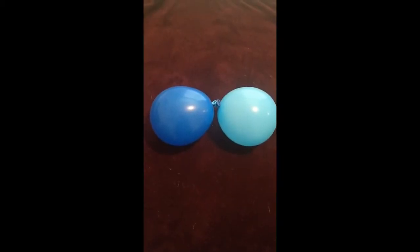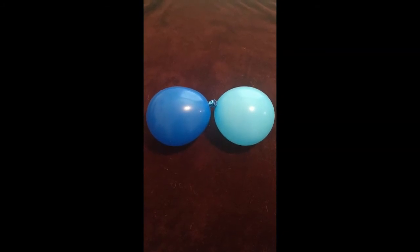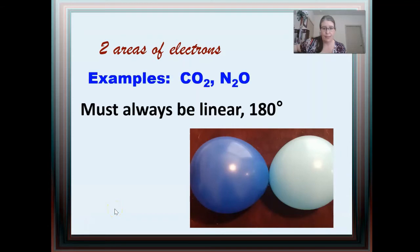When looking at electron geometry, you're always looking around the center atom — think of it as the knot where the balloons are tied together. With two areas of electrons around the center atom, whether those are bonds or lone pairs, you can see that the biggest angle between the light blue and the dark blue balloon is a straight line, or 180 degrees. That's why this is a linear electron geometry with a 180-degree angle between the two sides.